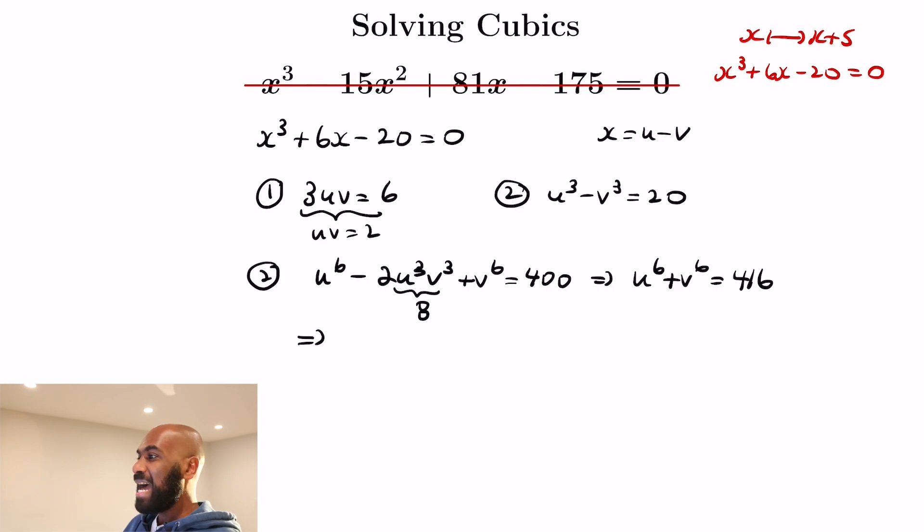Now we can add another copy of 2u cubed v cubed, and the reason to do that is because the left hand side now is actually u cubed plus v cubed all squared. So that'll give us access to u cubed plus v cubed.